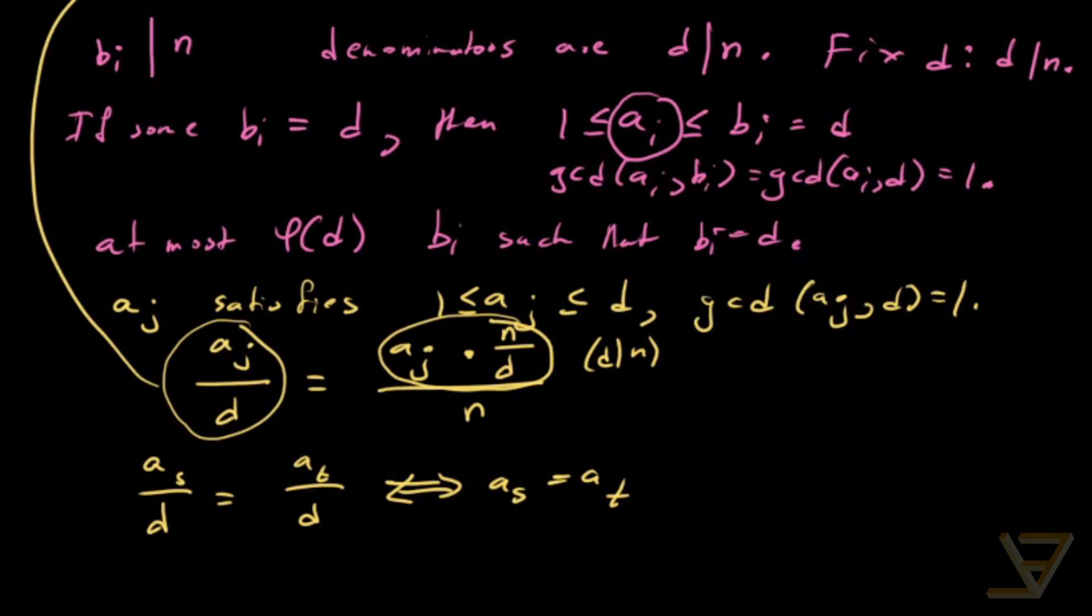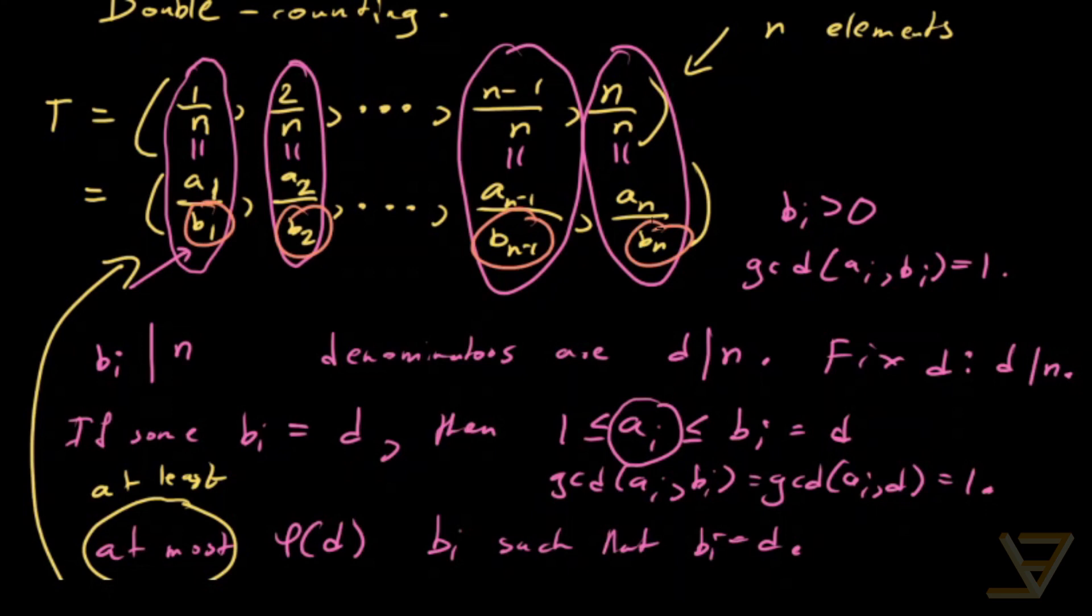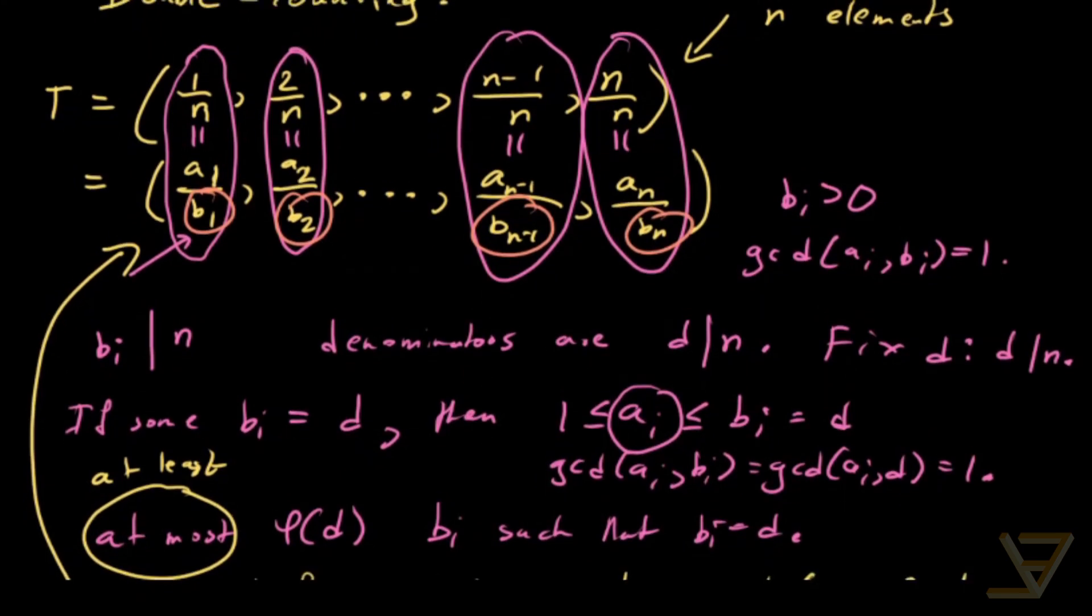So this shows that this at most is also an at least. So that tells us that if we look at these denominators, b1, b2, bn minus 1, bn, all the way through to bn, phi of d of them will be equal to d.